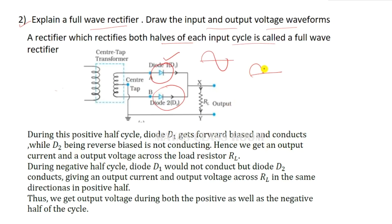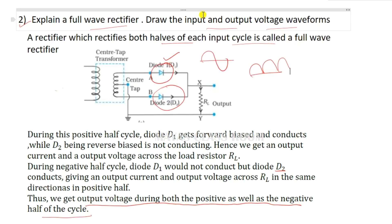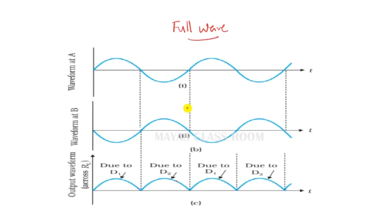During the negative half-cycle, diode D2 conducts. We get output voltage during both the positive and the negative half-cycle. If you look at the input waveform A or B, the output waveform will be continuous. This is the full-wave rectifier.